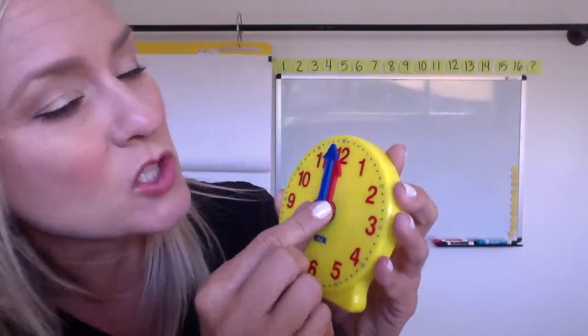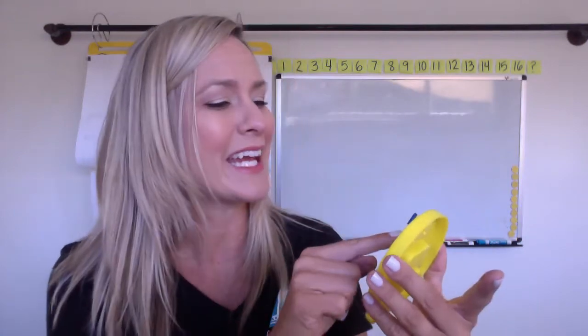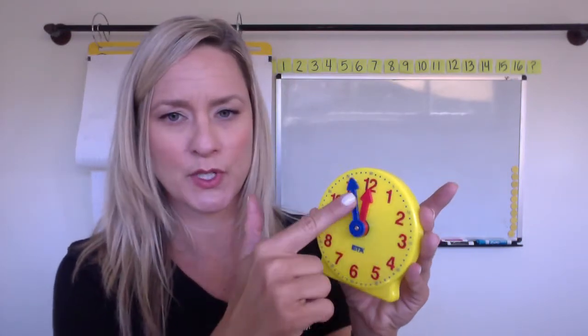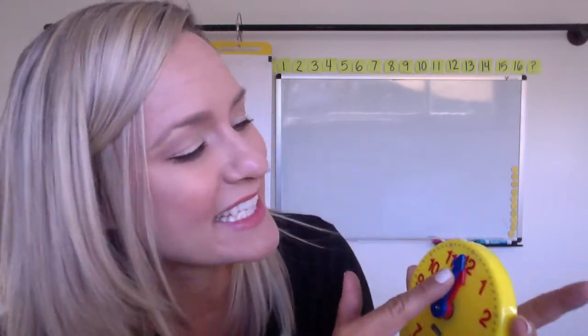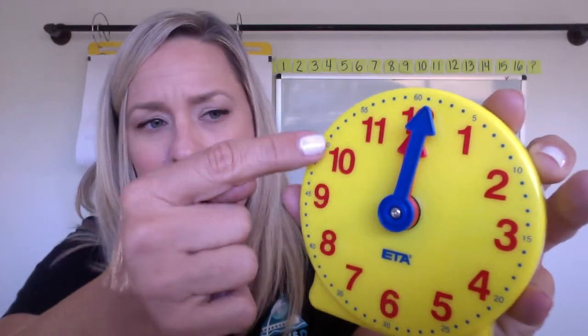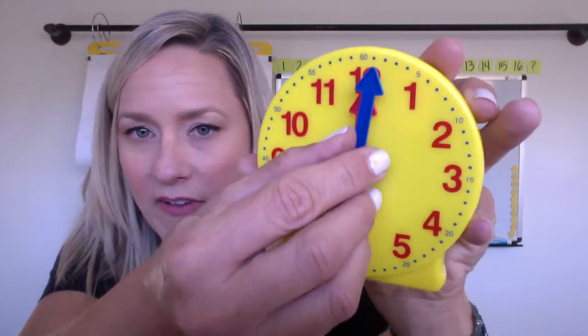All right, so the longer hand on this clock is blue. It is the minute hand. And maybe you notice that this minute hand's blue and there's also a blue ring around this clock. And that means those blue numbers match the blue hand.